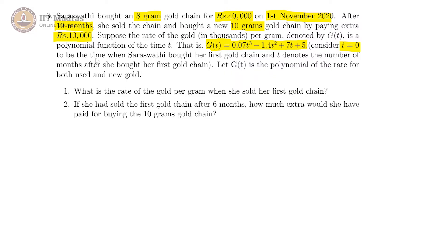t is the number of months since buying her first gold chain. g of t is a polynomial of the rate for both used and new gold.